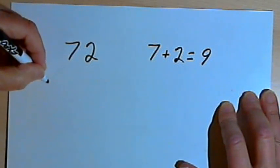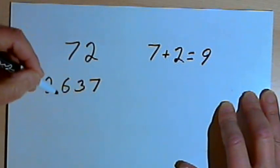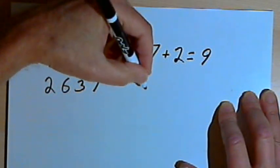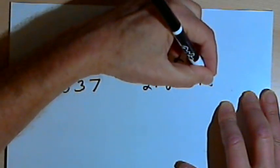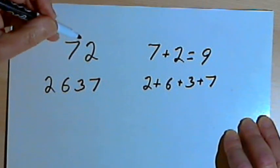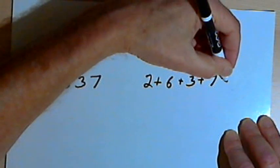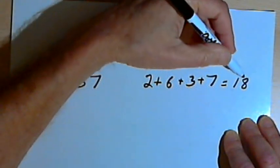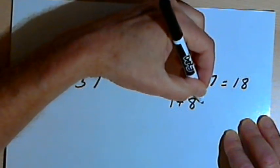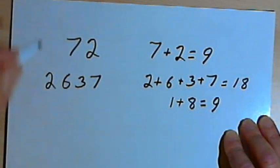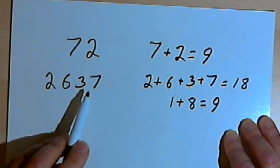Let's try a bigger number. Let's try 2637. So I'm going to add the digits. I'm going to add 2 plus 6 plus 3 plus 7. 2 plus 6 is 8, plus 3 is 11, plus 7 more is 18. I've ended up with a two-digit number, so I'm going to add those digits together. 1 plus 8 is 9, so my original number, 2637, is divisible by 9.